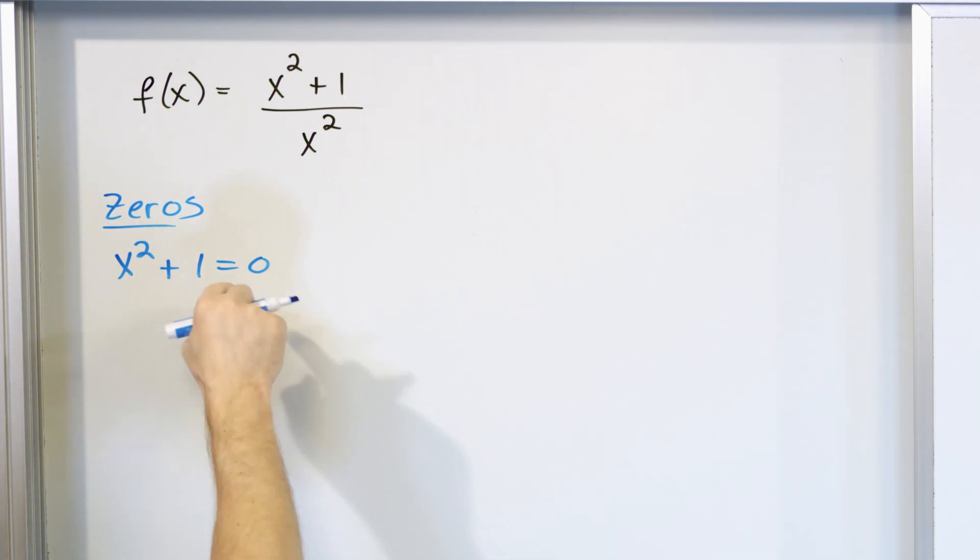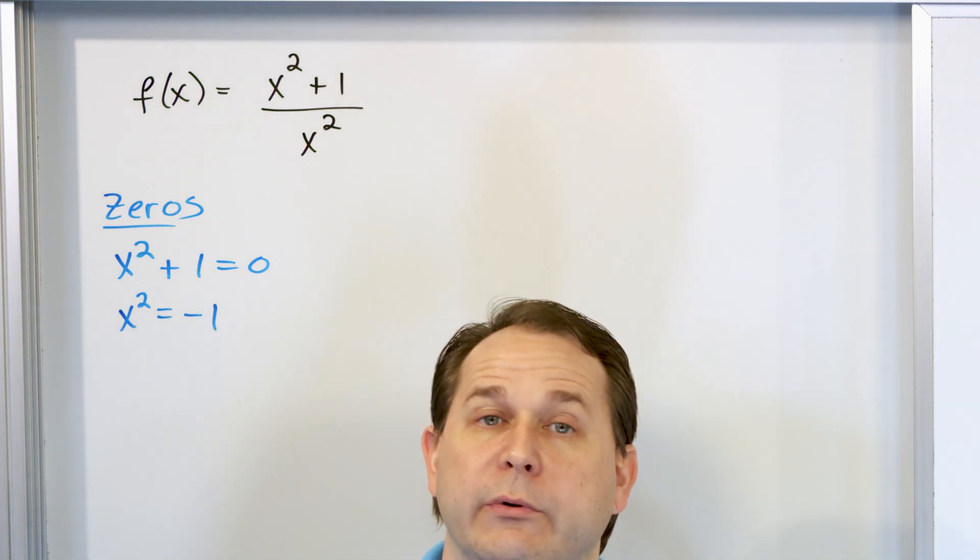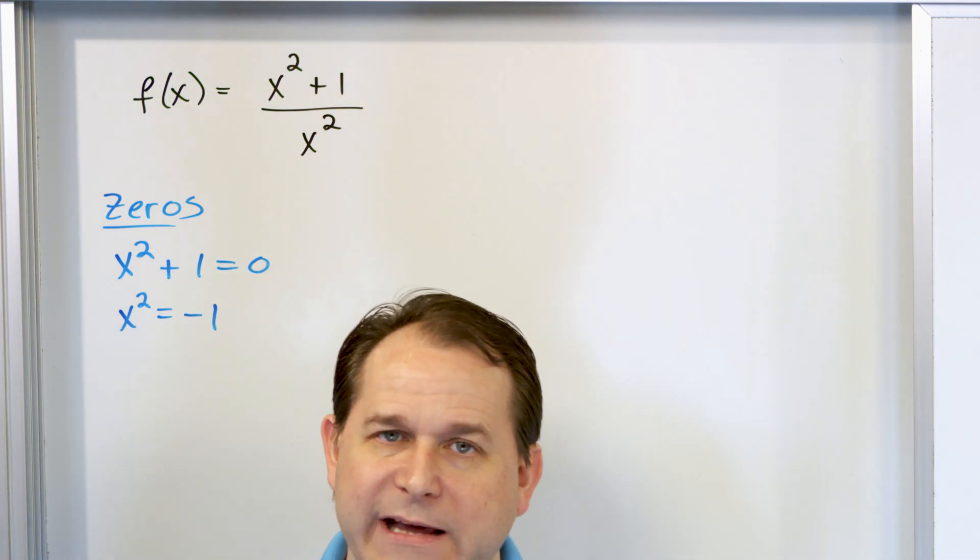So then some students will say, well let me go and move the 1 over here. Let's say x squared is equal to negative 1. How do I solve that? Well, we're going to learn later how to do that. We're going to use square roots, or what we call radicals in algebra. So you could take the square root of the left, which would kill the square here. And then you would have to take the square root of the right, square root of a negative number.